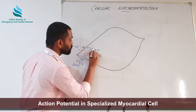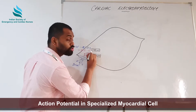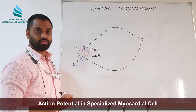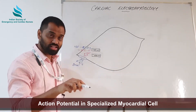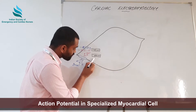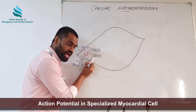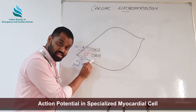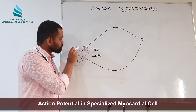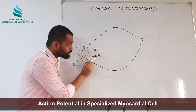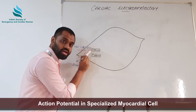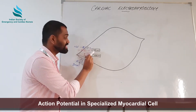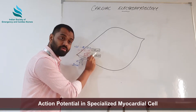Minus 45 millivolts is the threshold potential for an SA nodal cell. In contrast, in myocardial contractile cells we had a resting membrane potential of minus 90 and a threshold potential of minus 70. But here in an SA nodal cell, just because of this leaky sodium channel, the resting membrane potential is set at minus 60 millivolts and the threshold potential is set at minus 45 millivolts.